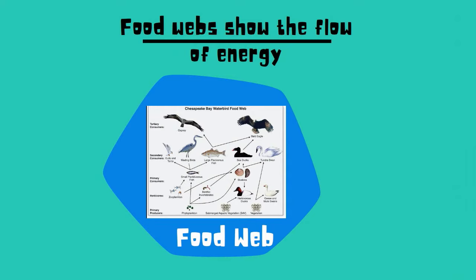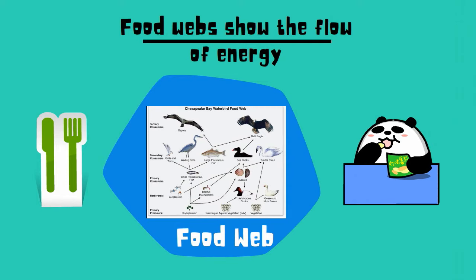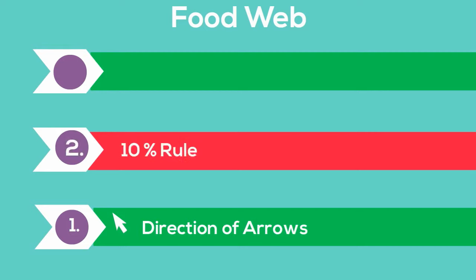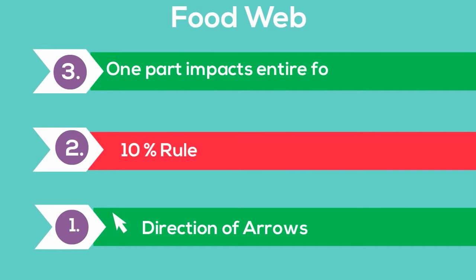In simple terms, it is a diagram showing what everyone eats and who gets eaten. There are three points I'd like to discuss: the direction of the arrows in a food web, the 10% rule, and how impacting one part of the food web impacts the entire food web.